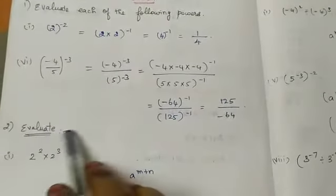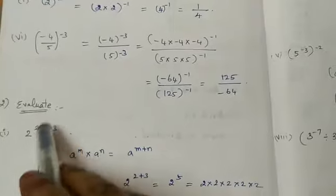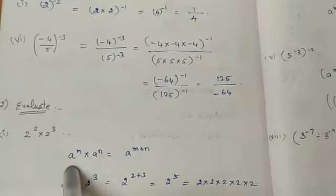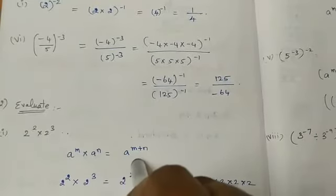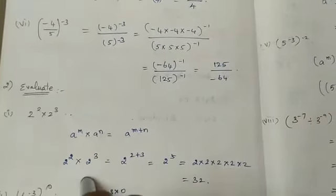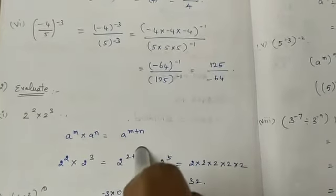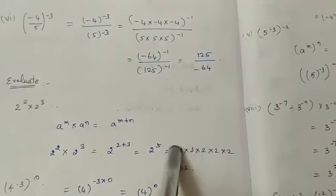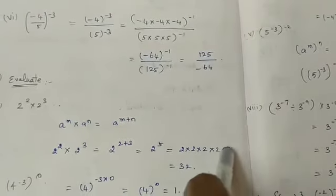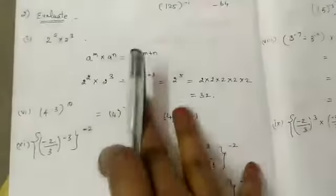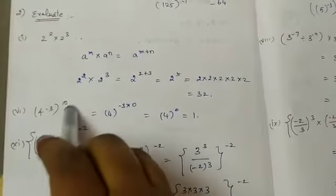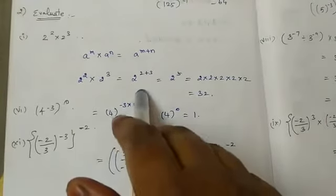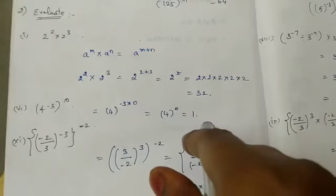The next evaluation: 2^2 × 2^3. Using law a^m × a^n = a^(m+n), we get 2^(2+3) = 2^5. So 2 multiplied 5 times: 2×2=4, 4×2=8, 8×2=16, 16×2=32. Next: (4^(-3))^0 — powers are multiplied: 4^(−3×0) = 4^0 = 1. Any number to the power 0 is 1.